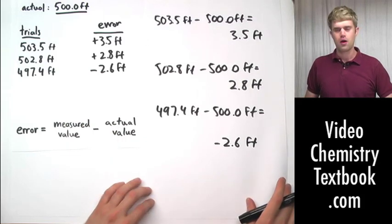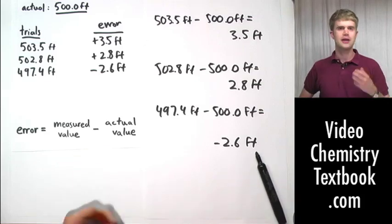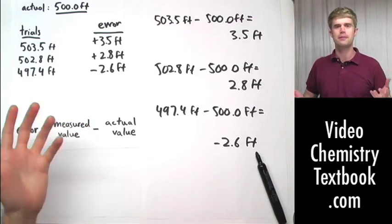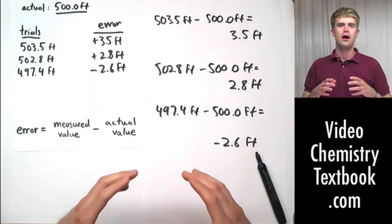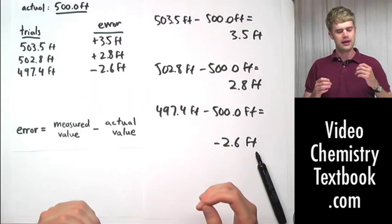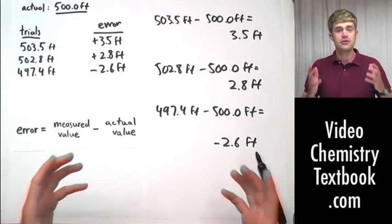Error can be a good thing to know, but often what's really useful is to know how much we should care about the error. Here's what I mean. Let's say we do some measurements, we compare them to the actual value, and then we calculate the error. Let's say the error comes out to be 1,000 feet.